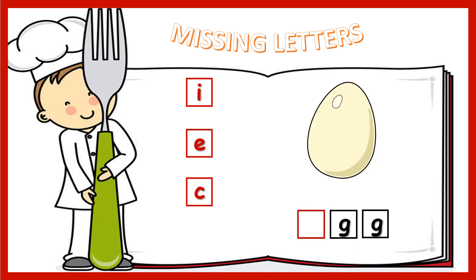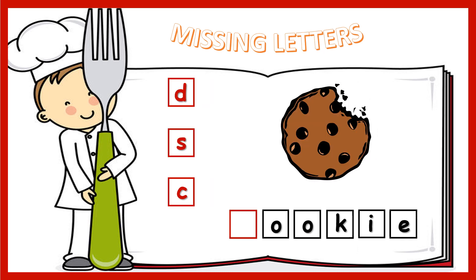It's an egg. What letter do you choose? We have E, G, G. That's the letter E. Very nice, everyone! The next one — how do you spell 'cookie'? Let's spell it! C, O, O, K, I, E. C is the correct answer.